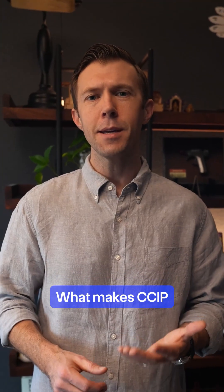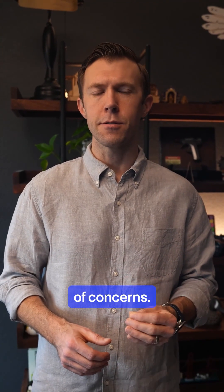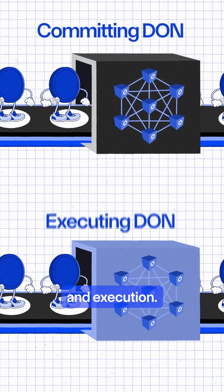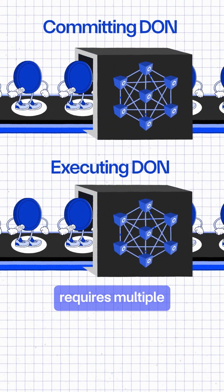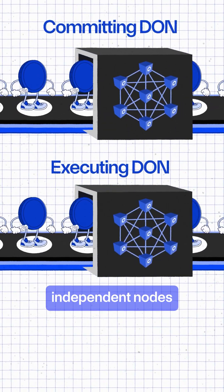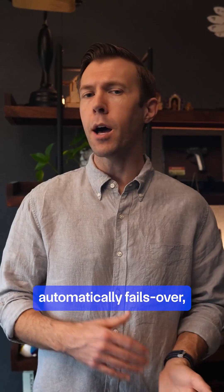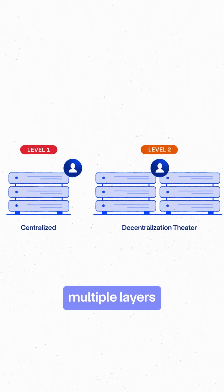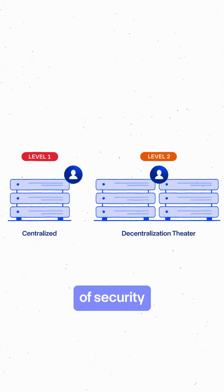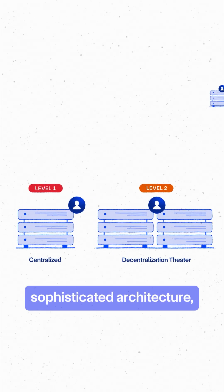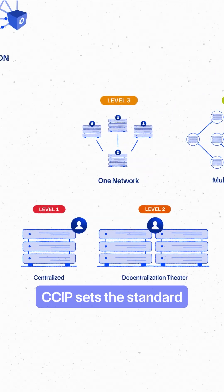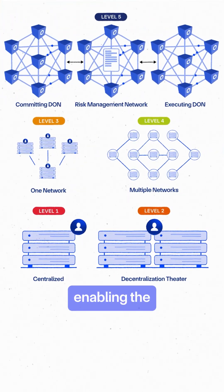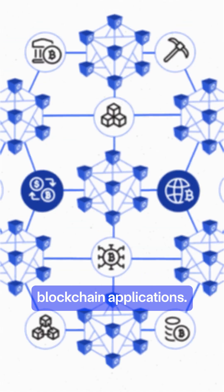What makes CCIP stand out is a separation of concerns. Different networks handle commitment and execution. Each network requires multiple independent nodes to reach consensus. The system automatically fails over, backing up any node if it fails. This creates multiple layers of security and redundancy. Through this sophisticated architecture, CCIP sets the standard for secure cross-chain communication, enabling the next generation of blockchain applications.